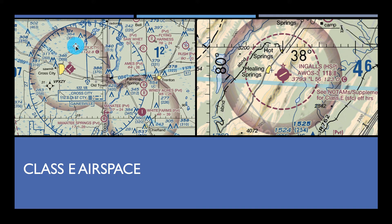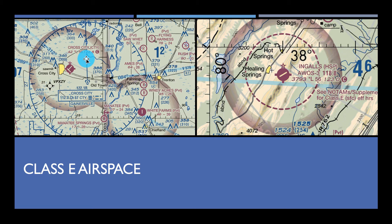Back to Class Echo. In the image on the left, there are two different floors where Class E starts. Inside the faded magenta lines, Class E's floor starts at 700 feet AGL — so at 699 feet AGL it would be Class G, and starting at 700 feet it's Class Echo. Outside the faded magenta lines, Class Echo starts at 1,200 feet AGL and goes up to 17,999 feet. For example, at the surface you're in Class Golf; climb to 600 feet, still Golf; climb to 800 feet and you're in Class Echo.